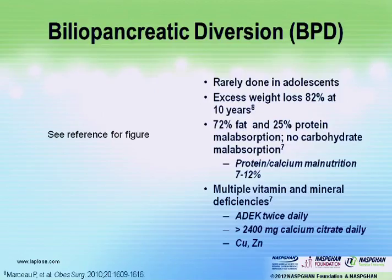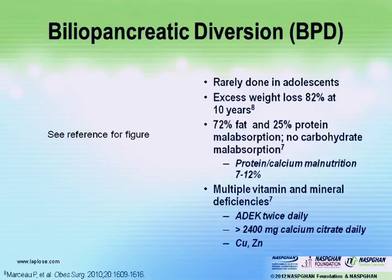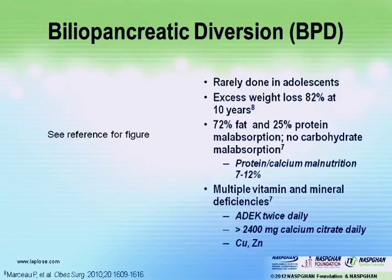The biliopancreatic diversion with duodenal switch is rarely done in adolescents — I've only seen it done in one pediatric patient. You've got a small stomach and you're bypassing a large amount of the small bowel, so you're going to have a lot of malabsorption. It's done more extensively in Europe — at least 30 or 40 adolescents have had it done, including a child at eight years of age. Excess weight loss is about 82% at 10 years. With that much bypass, you're malabsorbing about 75% of fat and about 25% of protein, though there is no carbohydrate malabsorption. You can expect a lot more malnutrition in addition to multiple vitamin and mineral deficiencies.